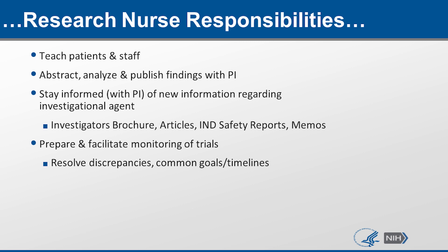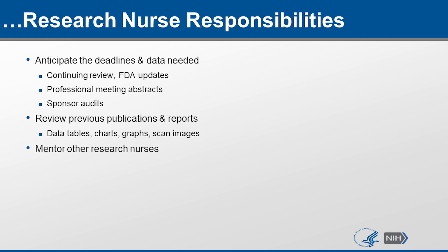Other research nurse responsibilities include teaching patients and staff, helping with abstracts, analyzing and publishing findings with the principal investigator, staying informed with the PI of new information regarding investigational agents, helping with investigator's brochures, articles, safety reports and memos, preparing and facilitating monitoring of trials, resolving discrepancies, meeting common goals and timelines, anticipating deadlines and data needed, helping with continuing reviews and any FDA updates, professional meeting abstracts, sponsor audits, reviewing previous publications and reports, helping with data tables, charts, graphs and scan images, and mentoring other research nurses.